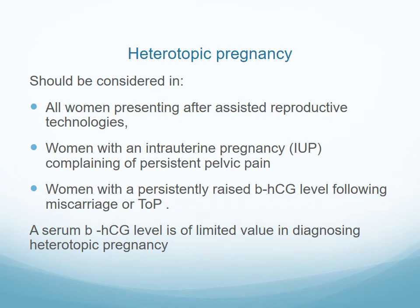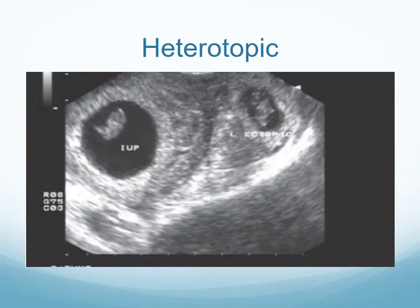Heterotopic pregnancy should be considered in patients with symptoms following assisted reproductive technology, in women with an intrauterine pregnancy complaining of persistent pelvic pain, or those with a persistently raised beta-hCG in the context of a presumed miscarriage. Importantly, serum beta-hCG level is of limited value in diagnosing heterotopic pregnancy.